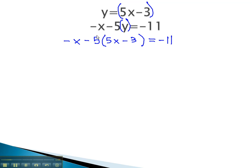This gives us an equation we can solve by first distributing the negative 5, giving us negative x minus 25x, plus 15, equals negative 11. Combining like terms gives us negative 6x, plus 15, equals negative 11.